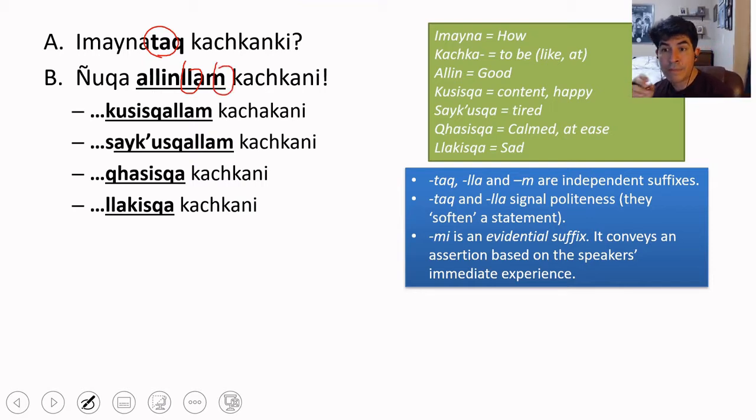What we can see here is that tach, lyak, and em are what we are going to call independent suffixes. This is a very important class, a very important type of suffixes in Quechua.